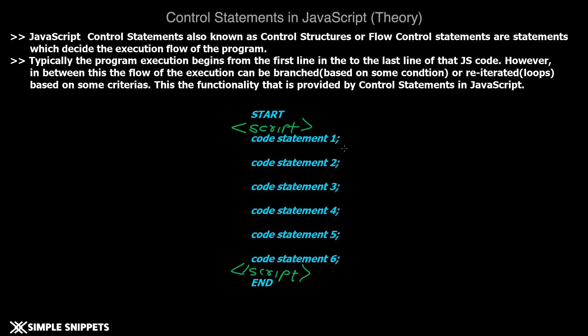What happens is the execution starts from line number one, that is code statement one, and then it moves on to line number two, then line number three and so on. So this is how the basic execution flow goes.